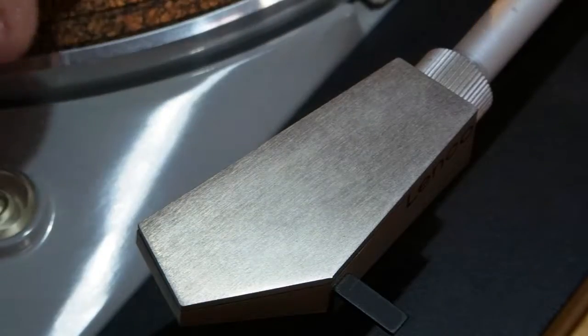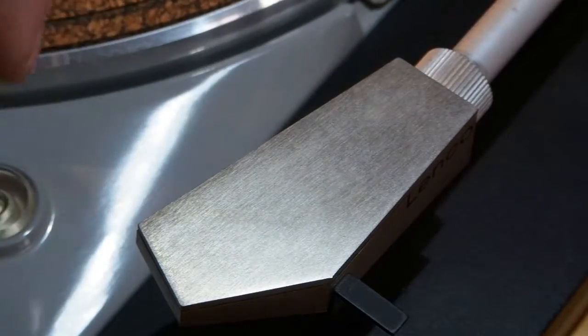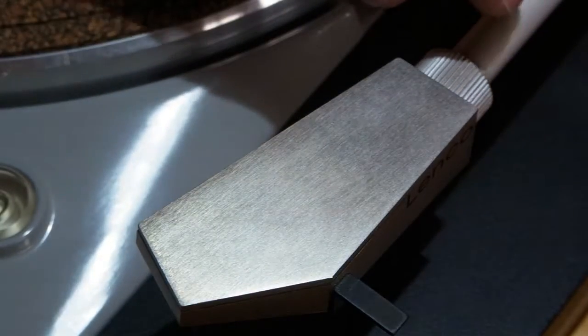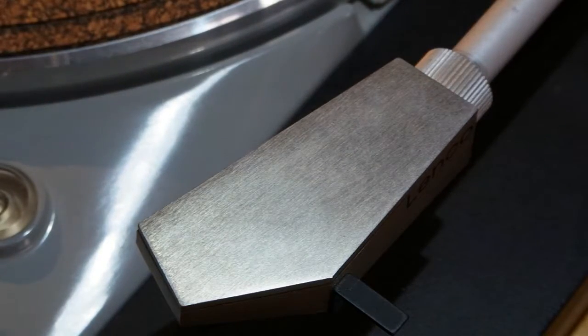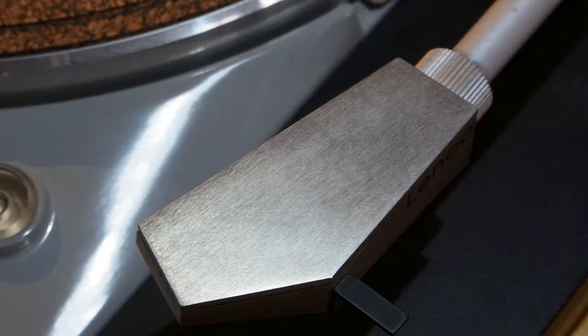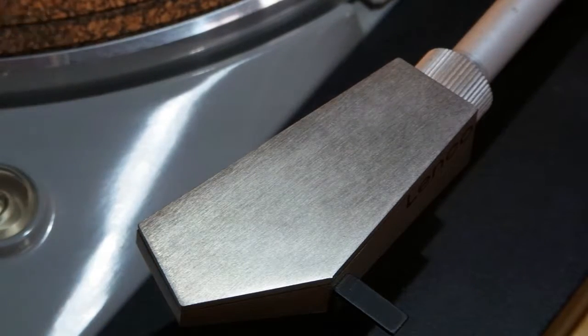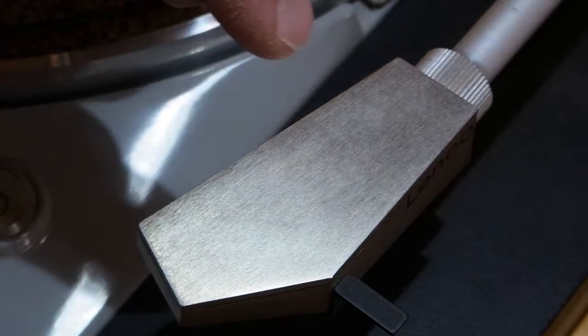Another feature of this tonearm is the head shell. It uses the same mounting as the later L75 tonearm, but this head shell is produced from cast aluminum. It is much heavier than the later L75 head shell, which is produced from pressed sheet aluminum.